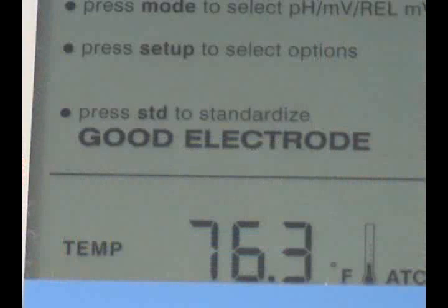Make sure that the screen reads good electrode when the calibration is done. If bad electrode appears, repeat the calibration or replace the meter.